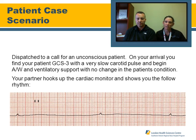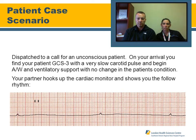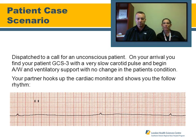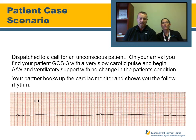In a patient care scenario: dispatched for an unconscious patient, you find a GCS of 3, very slow carotid pulse, and absent radial pulse. Begin airway and ventilatory support. With no change after resuscitative measures, the cardiac monitor is applied, blood pressure, SpO2 obtained, and an IV initiated. The extremely slow rate confirms a symptomatically bradycardic patient. Management involves one provider ventilating while the other establishes IV access and administers atropine, simultaneously patching to obtain orders for pacing or dopamine.